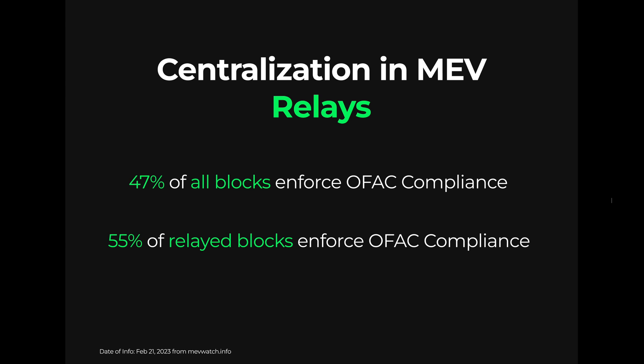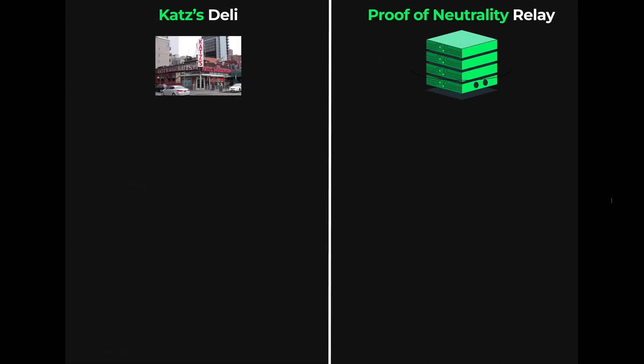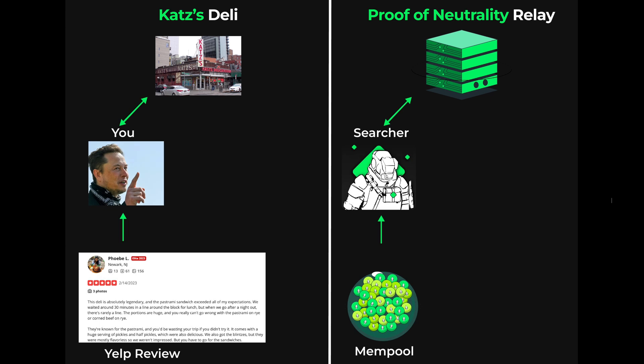We can compare actors in MEV to buying a sandwich from Katz's Deli in New York City. Imagine you accessed insider information through Yelp and found out the pastrami sandwich is the best before trying it. In the same way, a searcher accessing transaction data in the mempool will use it to predict the future state of the blockchain and capitalize on that knowledge to create a profitable situation.